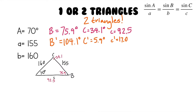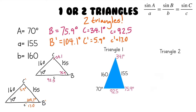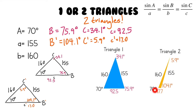If you remember, my two triangles looked like these rough sketches. Let's see what they would actually look like drawn to scale. The first triangle would look something like this, and the second triangle would look like this. As you can see, both triangles have the same three given parts: 70 degrees, 160, and 155 opposite the 70-degree angle, while the other three parts are different between the two triangles.